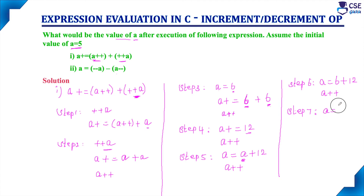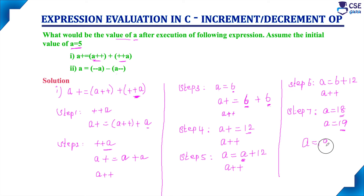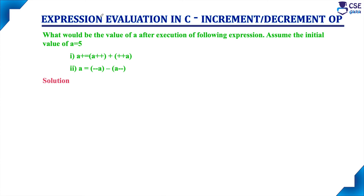Previously in the memory location of A, 18 was stored. After the post-increment operation, 19 is updated. So finally, the value stored in variable A is 19 after executing this complete expression.